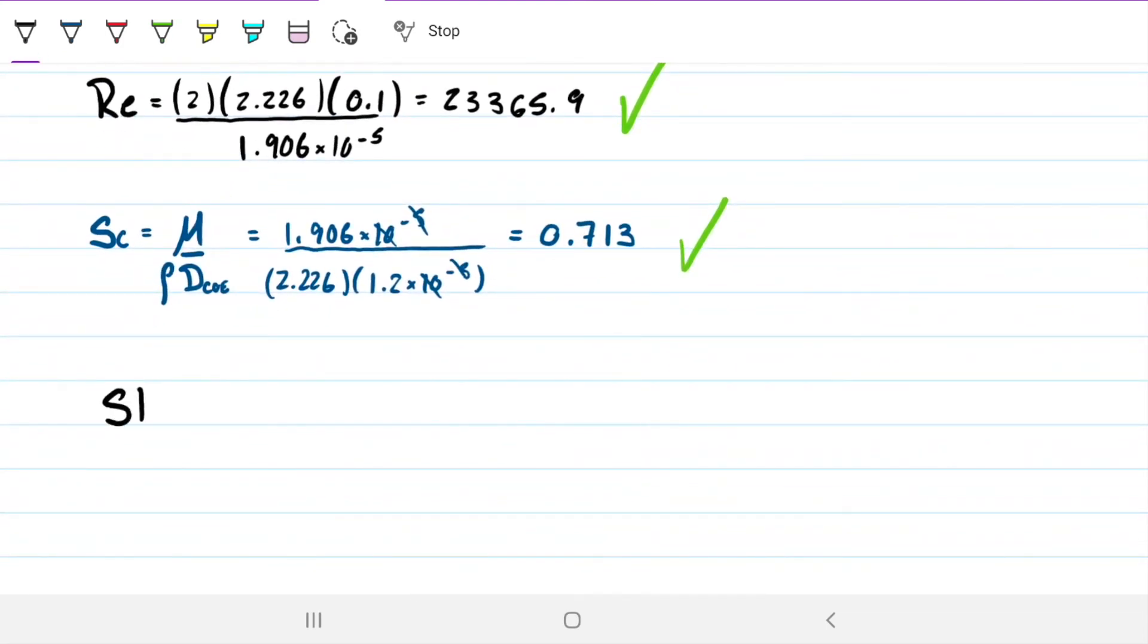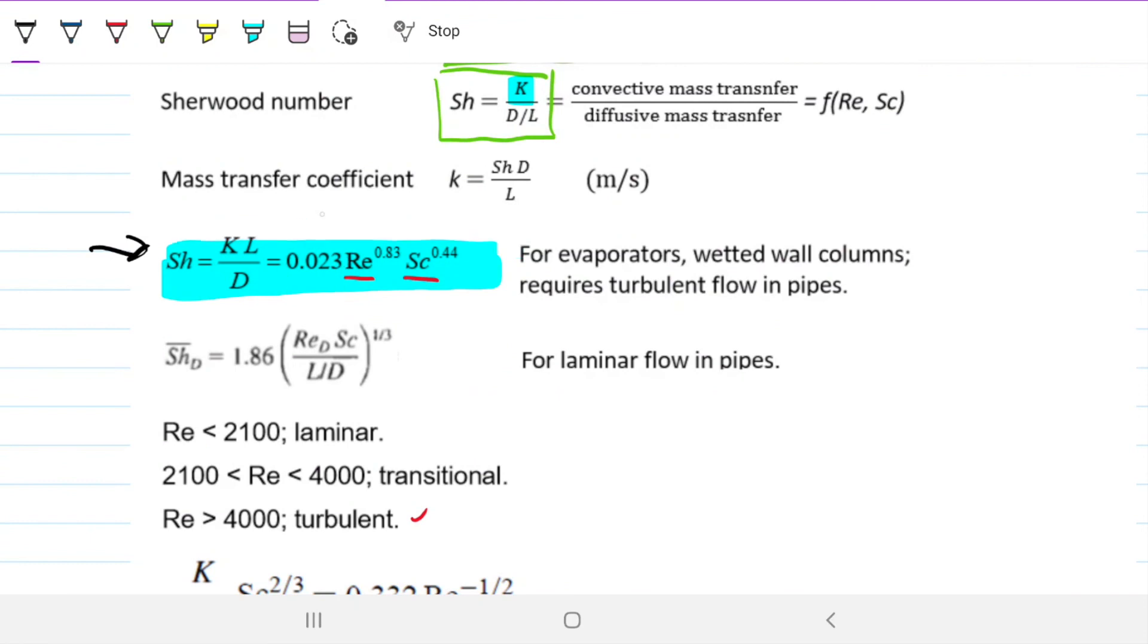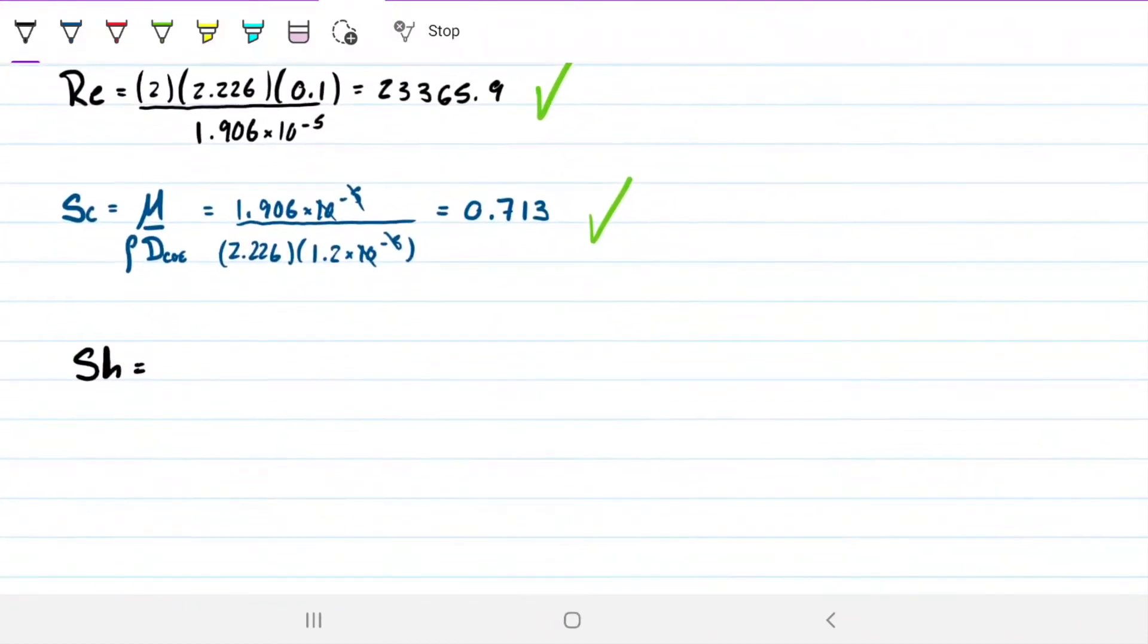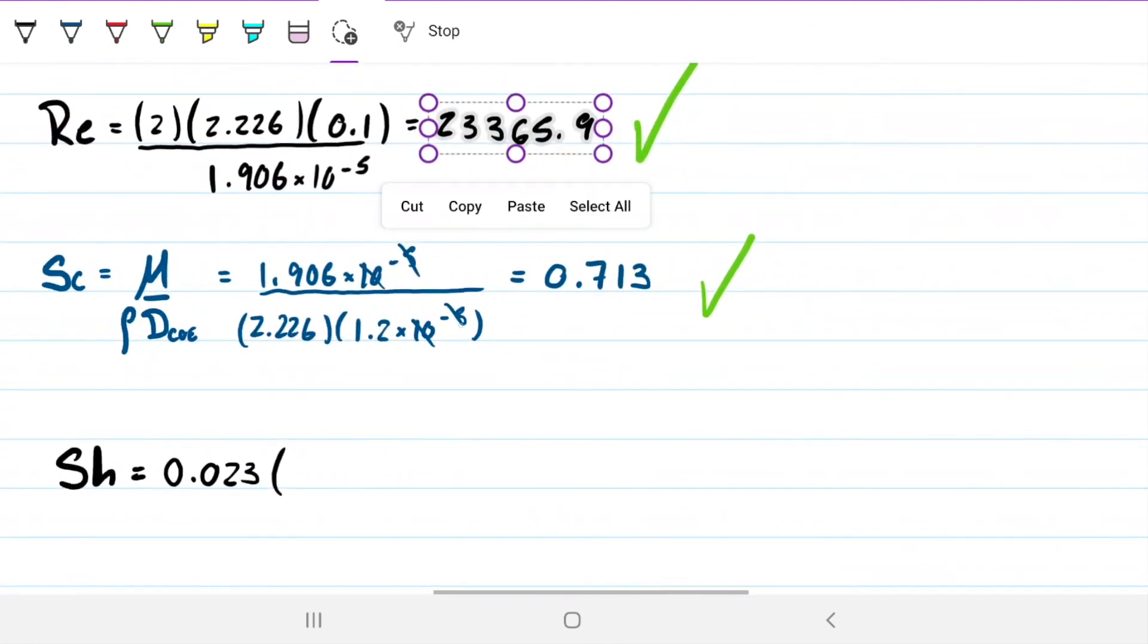And now we can do Sherwood. Sherwood will be just the relationship that we saw before. The one that I painted in blue, this one here. So Sherwood is going to be 0.023 times Reynolds to the 0.83 times Schmidt's to the 0.44. Empirical correlations for Sherwood's number. This gave me 83.76. Again, no dimensions here.